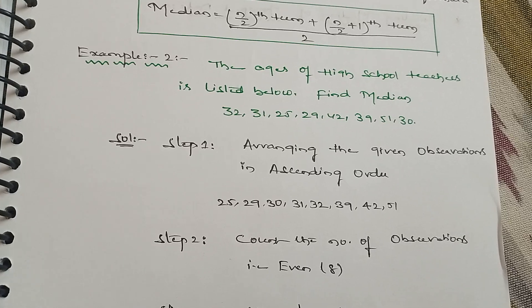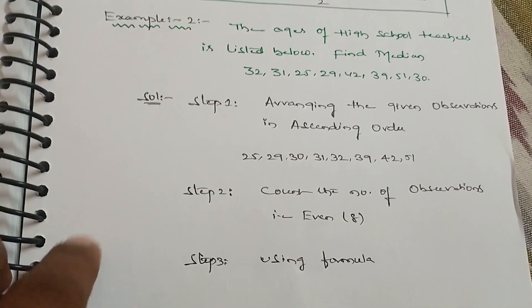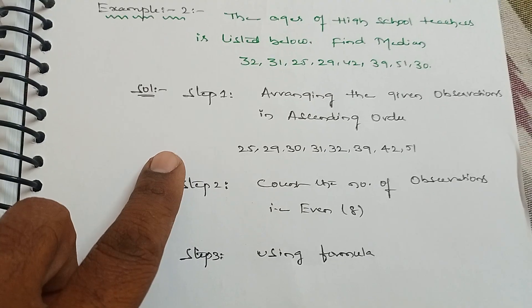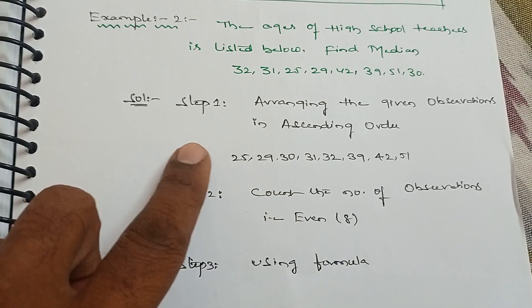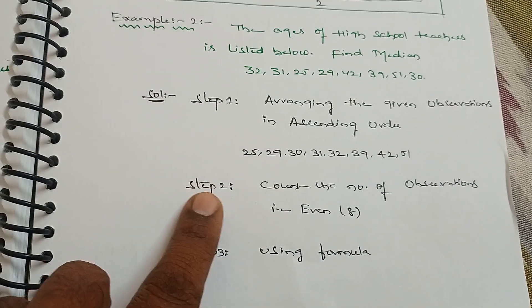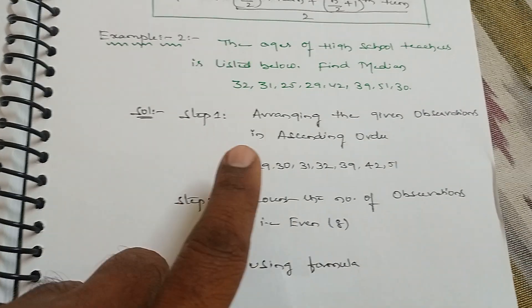First step: Arrange the given observations in either ascending or descending order. Arranging in ascending order: 25, 29, 30, 31, 32, 39, 42, 51. Now count the number of observations. Here the number of observations are 8, which is an even number.